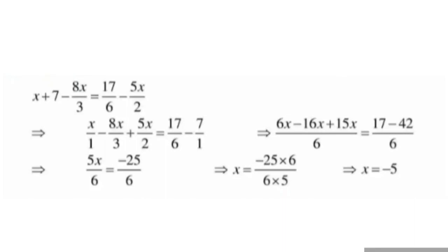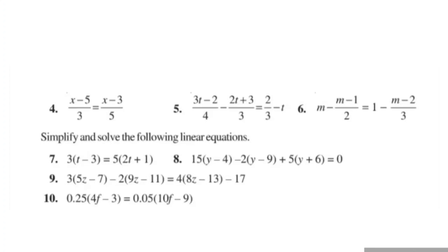So x is equal to minus 25 into 6 upon 6 into 5. The 6 and 6 cancel, and 5 fives are 25, so what remains is x is equal to minus 5.